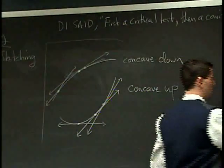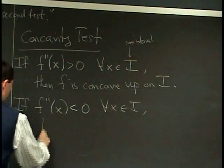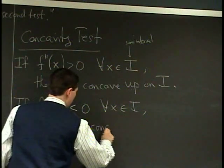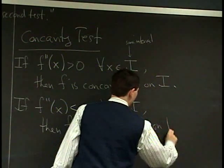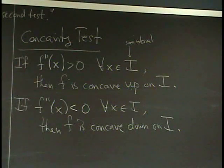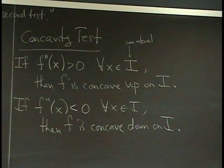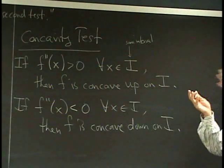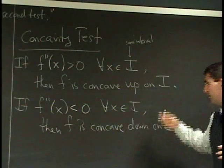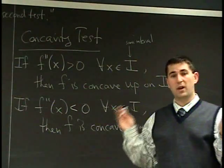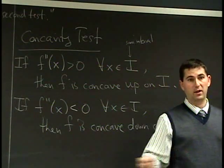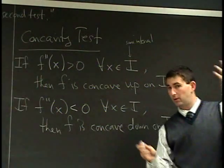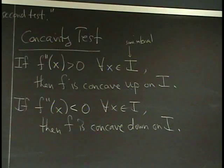The other half of this picture shows the other side of the concavity test, which is: if the second derivative is negative for all x in some interval, then f is concave down. This is a very simple test to use, because it's going to work exactly like the ID test. With the ID test, you take a derivative and see where it's positive or negative. With the concavity test, you take the second derivative and see where it's positive or negative, and both cases tell you something about the shape of the original graph.